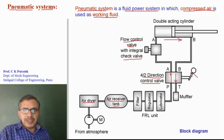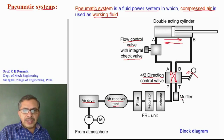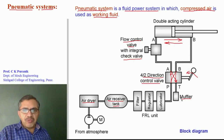When the lever is kept in the second position, compressed air flows from P to B and A to T, because of which the cylinder will retract. A muffler or silencer is a small component fitted to the exhaust port of the direction control valve. Its function is to reduce noise during exhaust of compressed air.